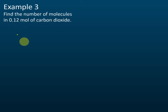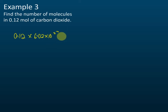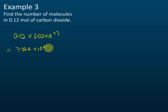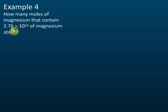Find the number of molecules — it's the same approach. The number of molecules is 0.12 × 6.02 × 10²³. Using a calculator, the answer is 7.224 × 10²² molecules.